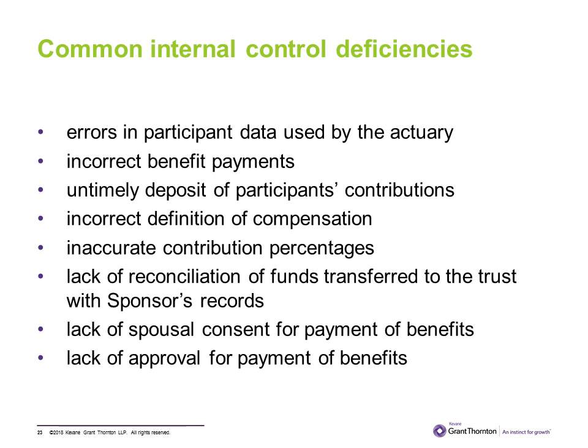Another common deficiency with significant monetary consequences is using an incorrect definition of compensation. For example, if the plan document defines eligible compensation as gross salary but the system excludes bonus and car allowance, the plan sponsor must deposit the missing matching contribution and 50% of the missing employee deferrals plus corresponding lost earnings. Another deficiency is inaccurate contribution percentages — for instance, if a participant elected 2% deferral but the system withheld 20%. The plan sponsor should make spot checks and validate information with original documents in the employee file.